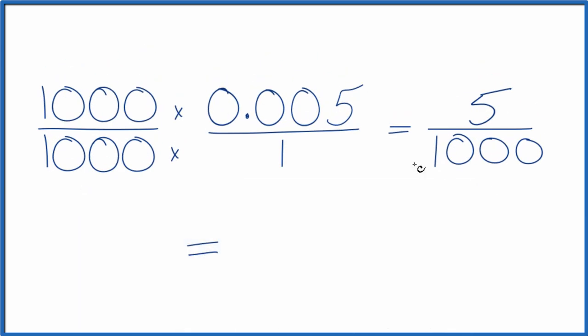Let's do that. 5 goes into 5 one time. 5 goes into 1,000 two hundred times. So the fraction 5 over 1,000 is equal to the fraction 1 over 200.